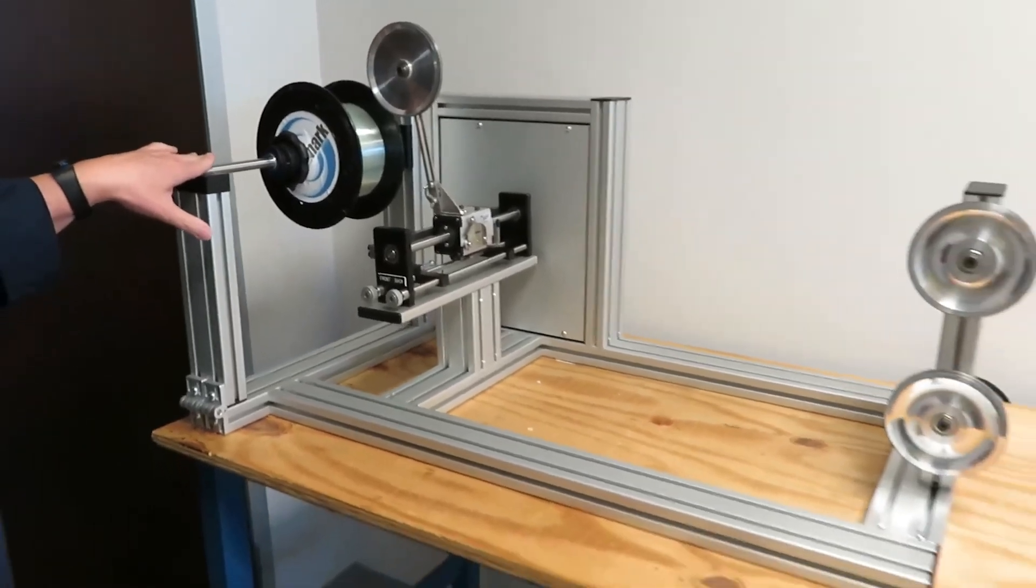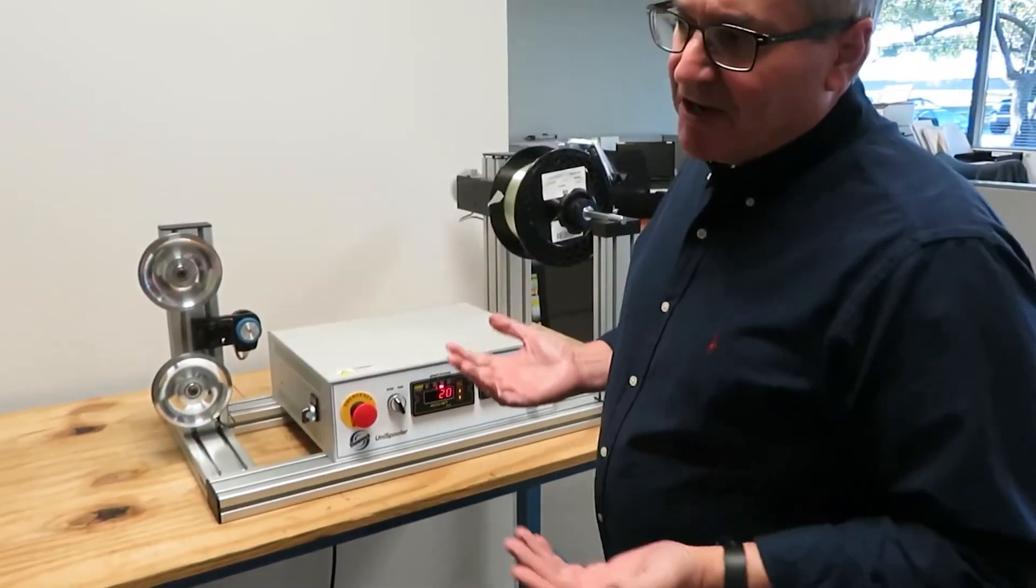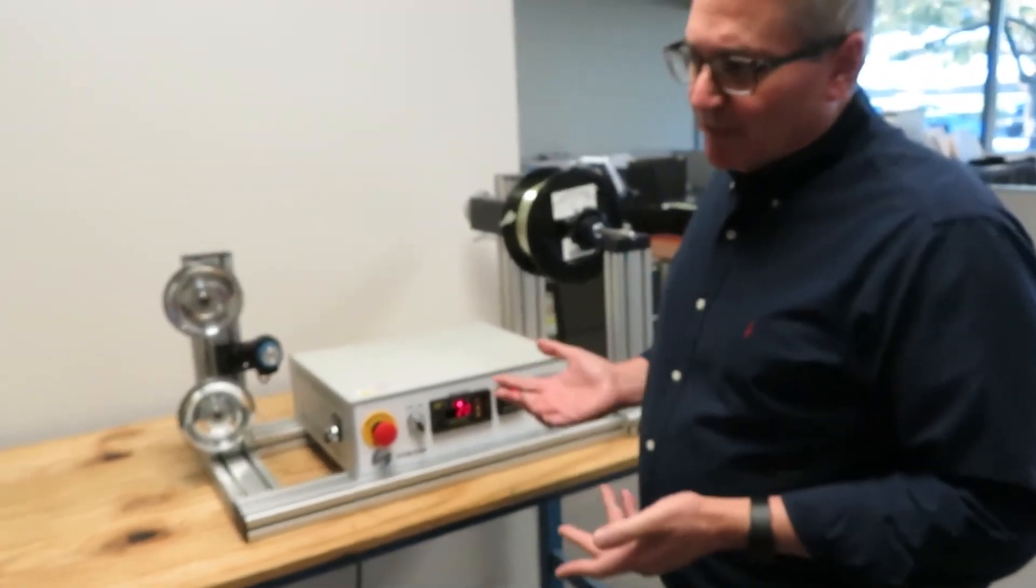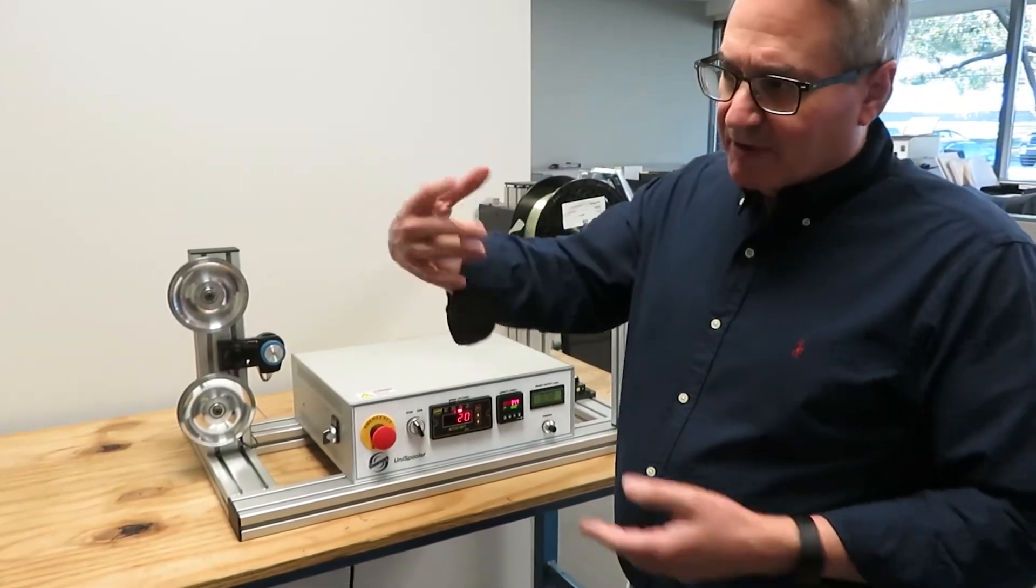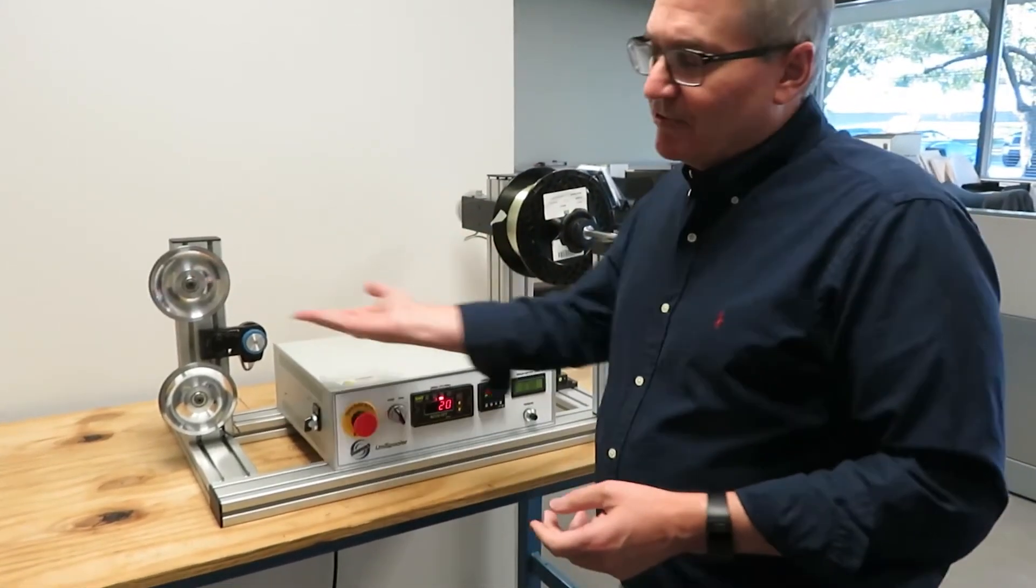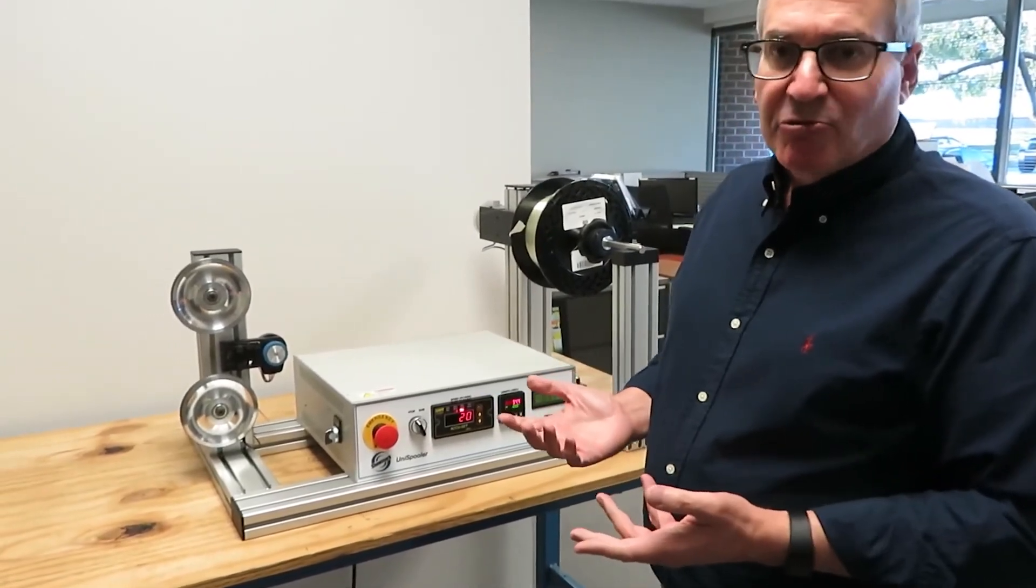So the other unique function of this machine is that normally a standard winder or unispooler turns the take-up motor at a constant rpm so as that spool builds up the linear rate of the wire running through it will increase proportionally.